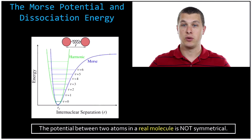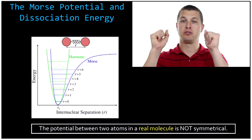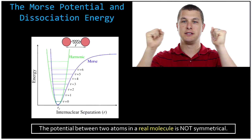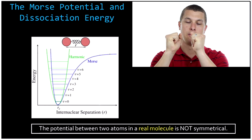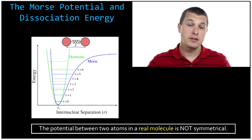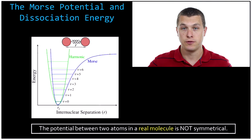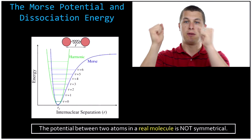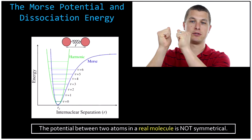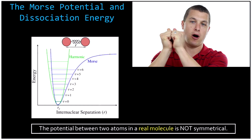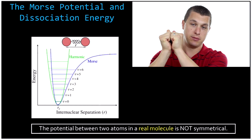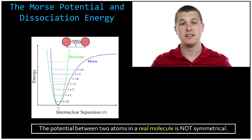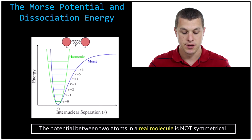In the harmonic oscillator, we thought about that potential as totally symmetric, so it's just as hard to pull atoms apart as it is to push them together. That turns out to not, strictly speaking, be true for real molecules. Just like with my fists, as they come closer and closer, eventually they run into each other, and that makes it harder to push them together than it does to pull them apart.